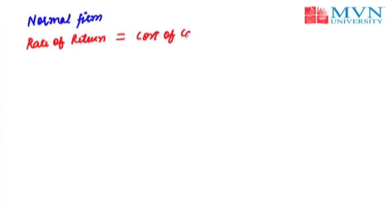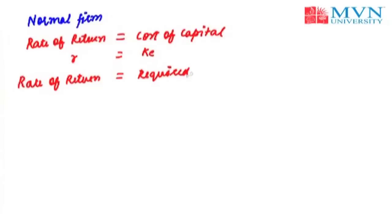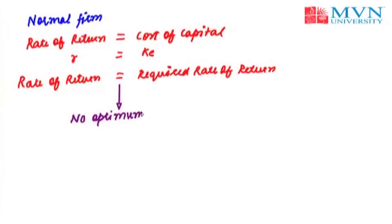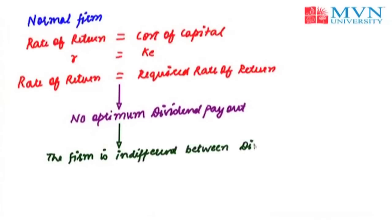The third case is of the normal firm, where the rate of return R is equal to the cost of capital Ke, which means the rate of return is exactly the same as the required rate of return of investors. In these types of firms, the dividend policy will not affect the market value of shares, as shareholders will get the same returns from the firm as expected by them. For such firms, there is no optimum dividend payout, and the value of the firm would not change with a change in the dividend rate, indicating the firm is indifferent between dividends and investments. These normal firms can either distribute all earnings as dividends or retain the amount, because it does not affect the valuation of the firm.